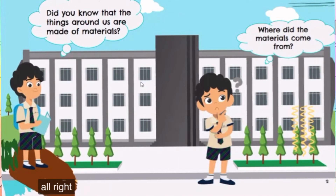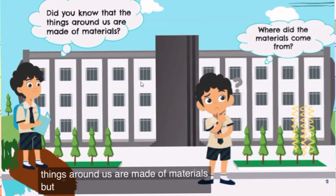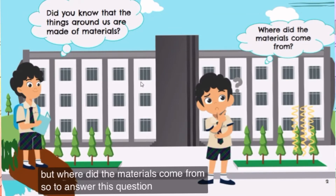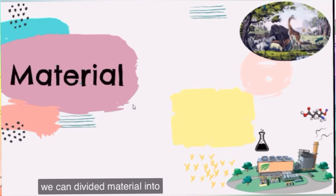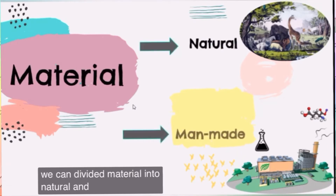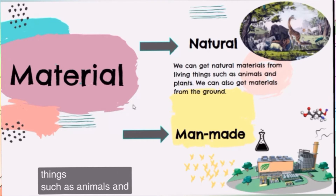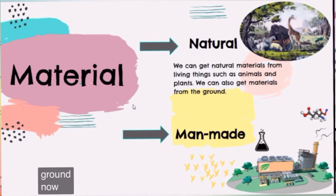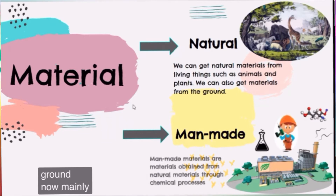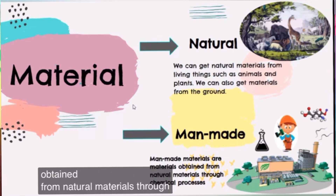Did you know that the things around us are made of materials? But where did the materials come from? We can divide materials into natural and man-made. We can get natural materials from living things such as animals and plants. We can also get materials from the ground. Man-made materials are materials obtained from natural materials through chemical processes.